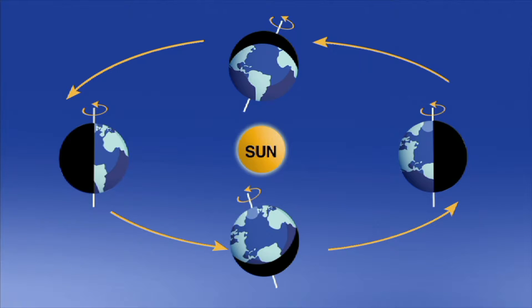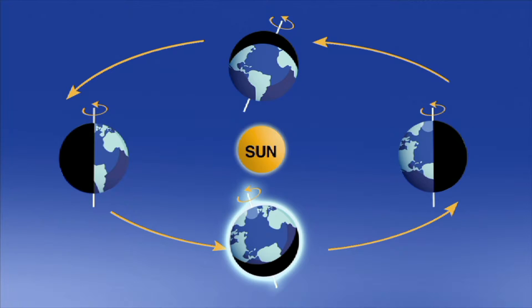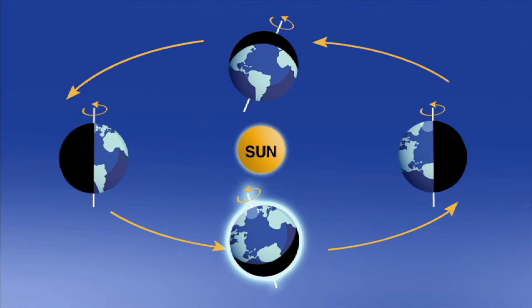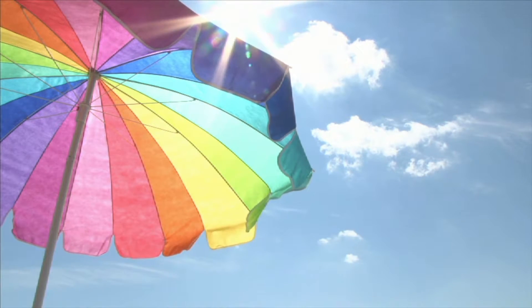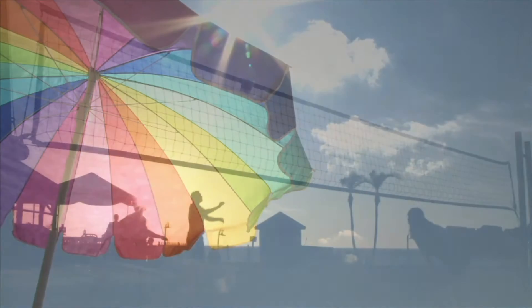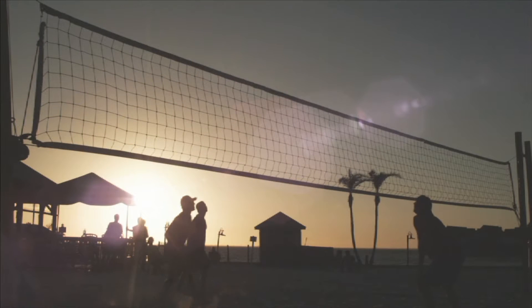When the North Pole of the Earth is tilted toward the Sun, we, in the Northern Hemisphere, receive more sunlight, and it's summer. Days feel longer because the Sun rises earlier in the morning and sets later at night.